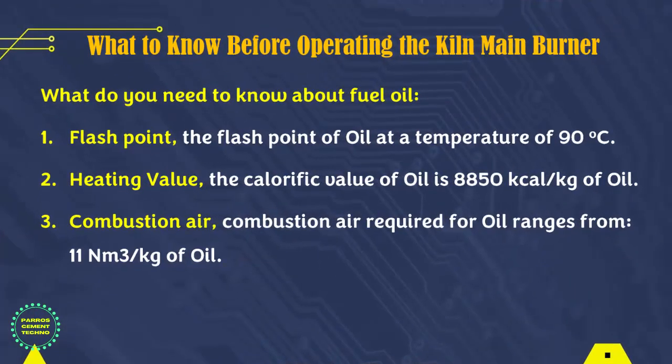Before operating the main burner there are several things that must be understood first. For diesel oil fuel: the flash point is at temperatures ranging from 60 to 90 degrees Celsius. The calorific value of oil is around 8,850 kilocalories per kilogram of oil. Combustion air required for oil ranges from 11 normal meter cubic per kilogram of oil, and air requirements are adjusted to fuel consumption.